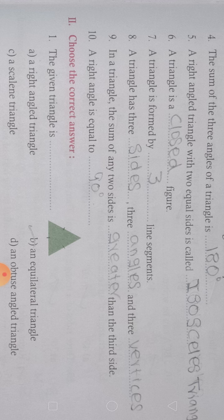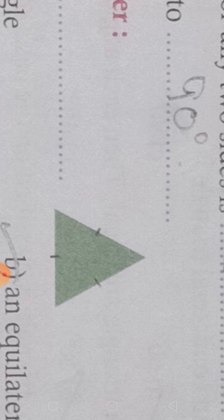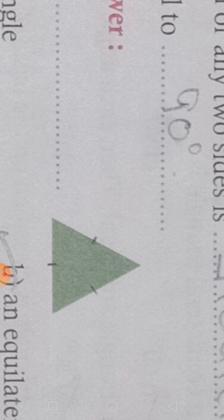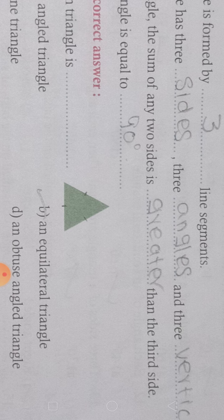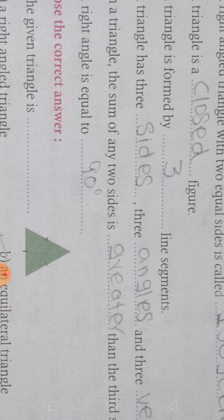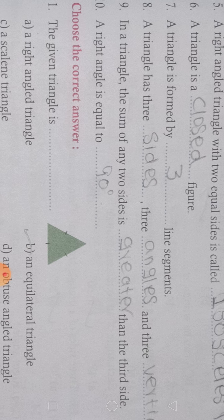A triangle is a closed figure. It is formed by three line segments. A line segment has a starting point and an end point. If it has no endpoints it is called a line — a line goes in both directions indefinitely. So a triangle is formed by three line segments.